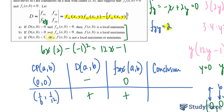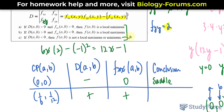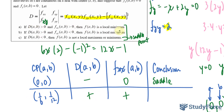Let's conclude. At (0, 0): D is negative and f_xx = 0, so this is a saddle point. At (1/6, 1/12): D is positive and f_xx is positive, therefore there is a local minimum at this point. Note: if the determinant equals 0, then the test is inconclusive. And there you have it — that is how to find the local maximum or minimum and saddle points of a function.